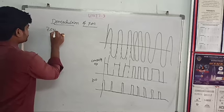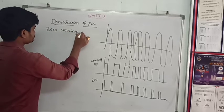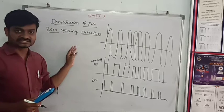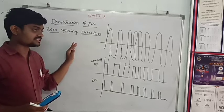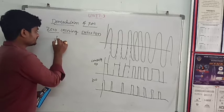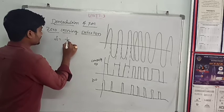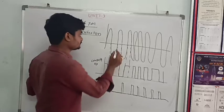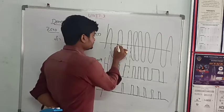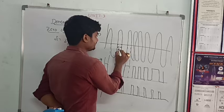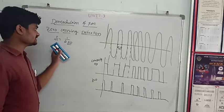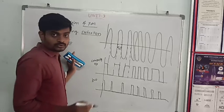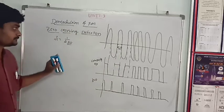Zero crossing detection operates on the principle that the instantaneous frequency of FM, that is Fi, equals 1 by 2 delta D. Delta D is the time difference between the adjacent zero crossing points. The FM signal's instantaneous frequency Fi should be 1 by 2 delta D, where delta D is the difference between the two adjacent zero crossing points.